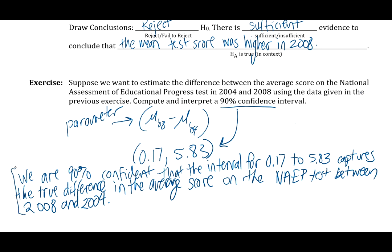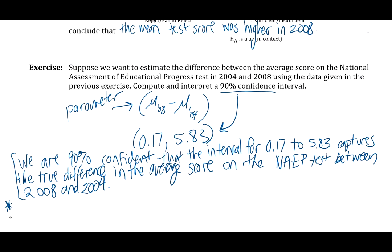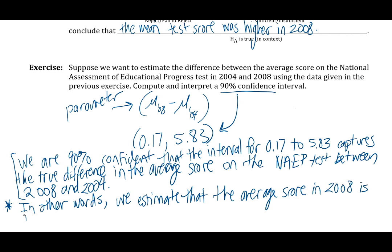Now this is okay, but what does it actually mean? I would suggest that you go one step further when you're interpreting confidence intervals about differences, and tell us which one is bigger. In other words, we estimate that the average score in 2008 is between 0.17 and 5.83 higher than in 2004. We're saying that the average score is bigger in 2008 than it was in 2004 by between 0.17 and 5.83 points.